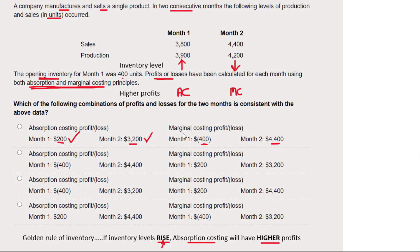Let's check the other three to make sure they don't fit. Option two: in month one, absorption costing made a loss and marginal costing was better — that does not fit what we know from the numbers, so option two cannot be correct. Option three: absorption costing makes a loss in month one of 400 and marginal costing is better — again, that does not fit; it's absorption costing that wins in month one, so option three can't be right either.